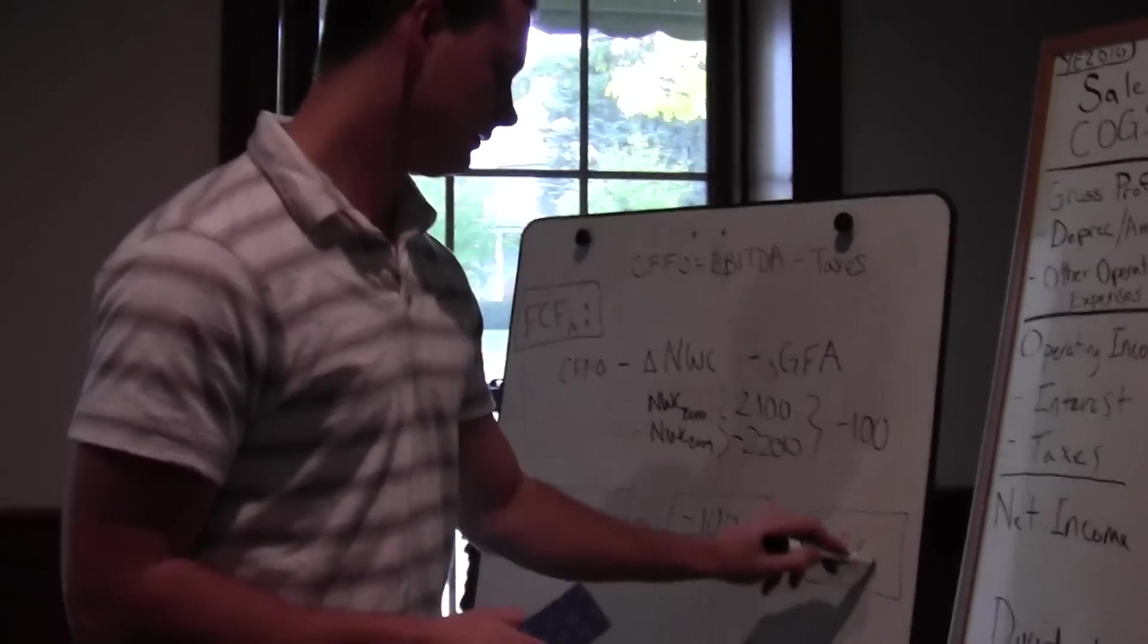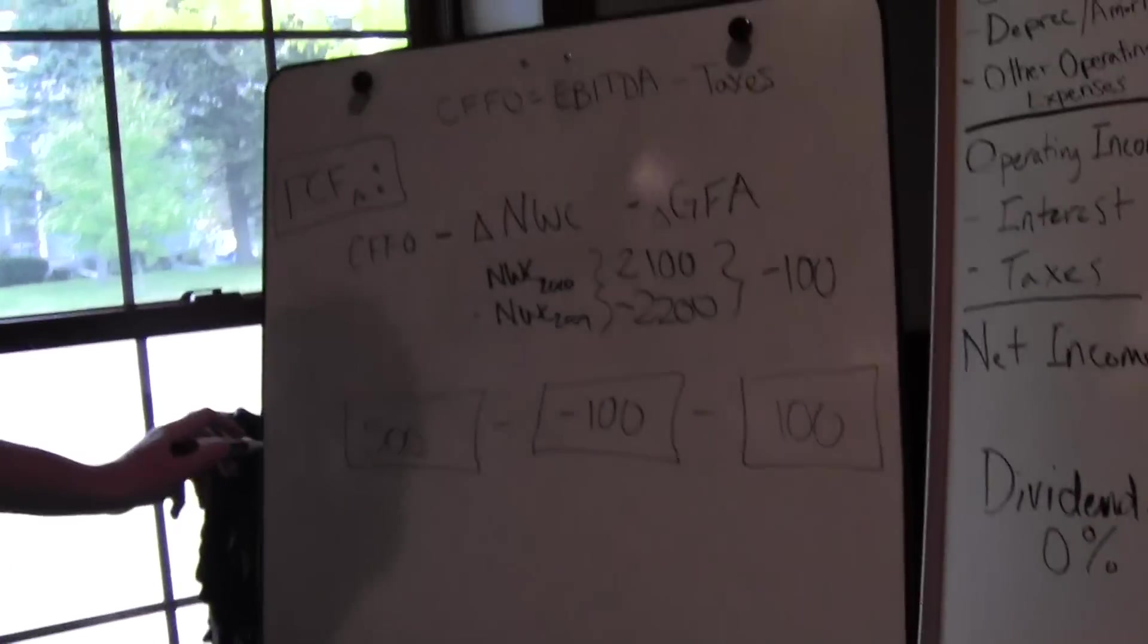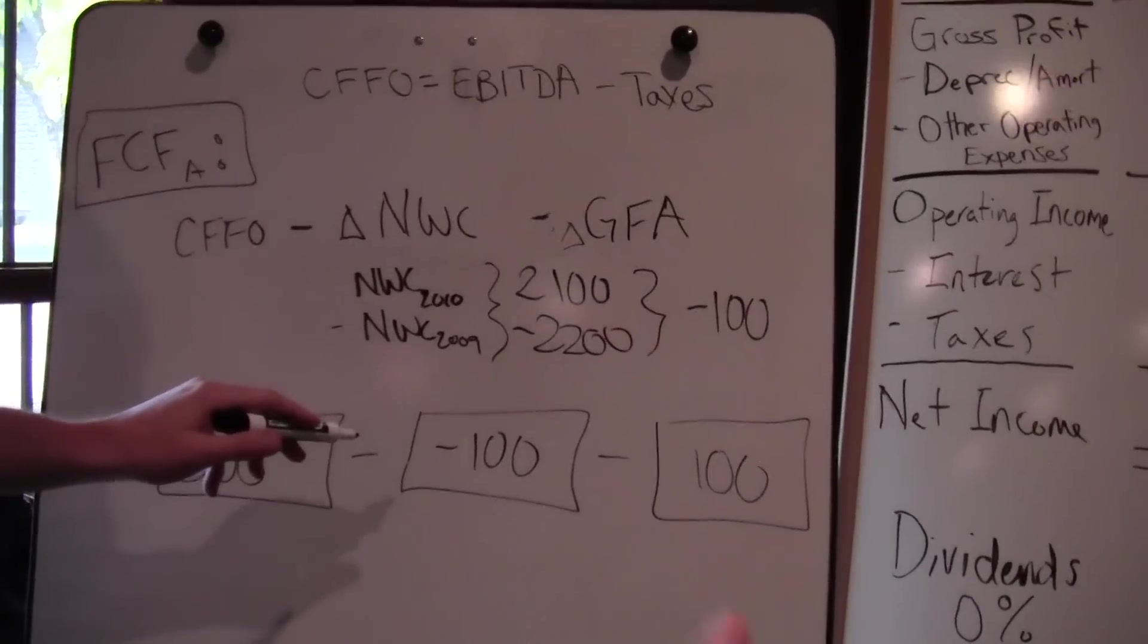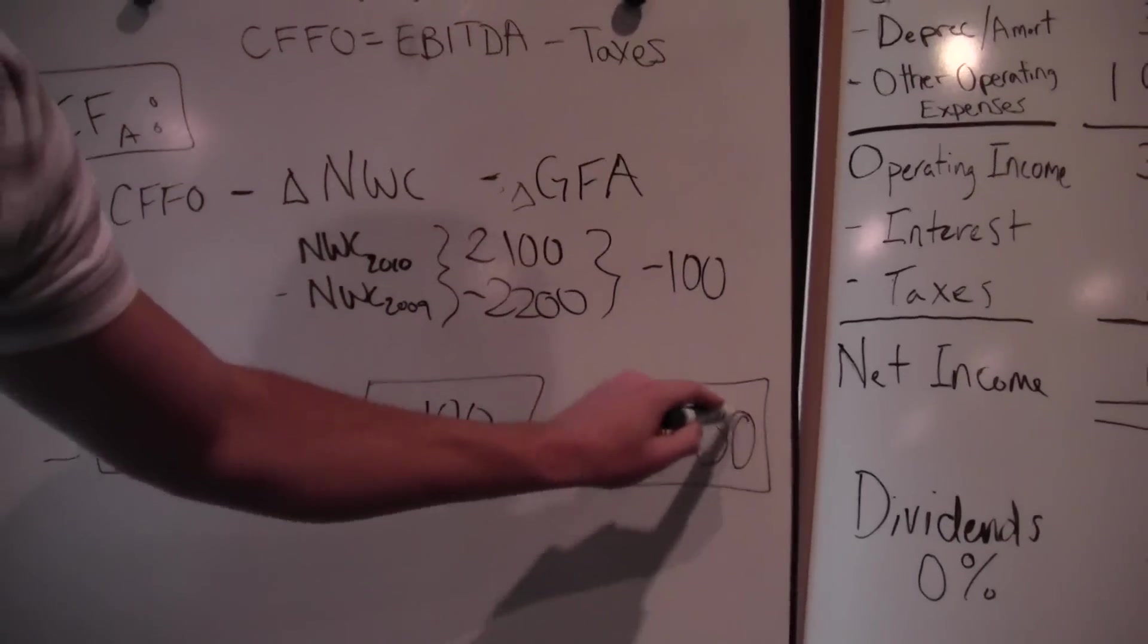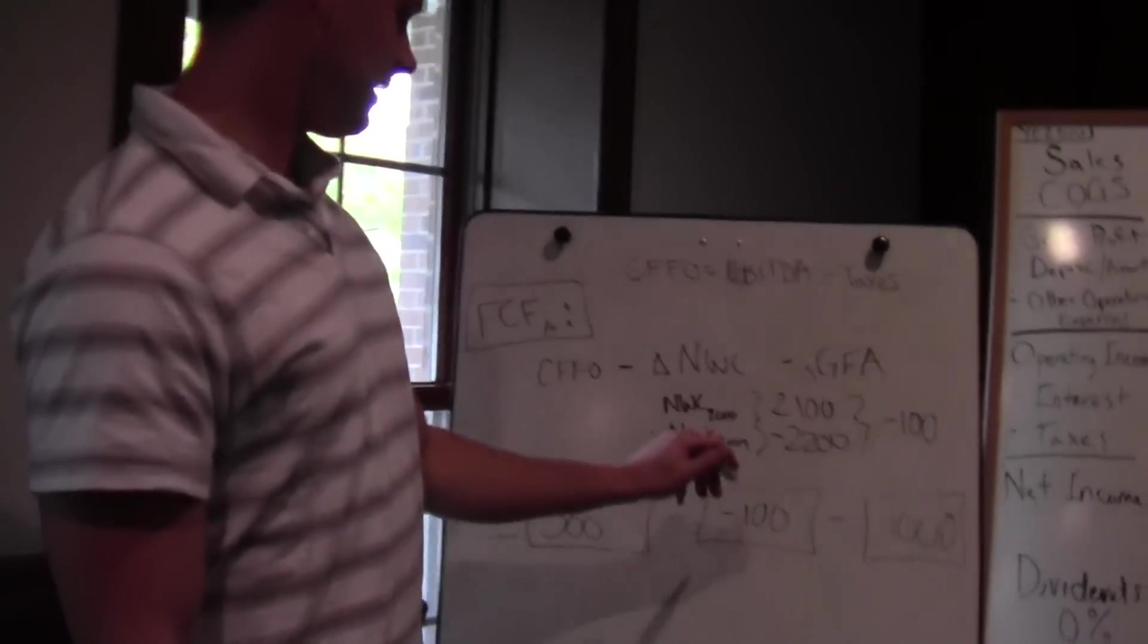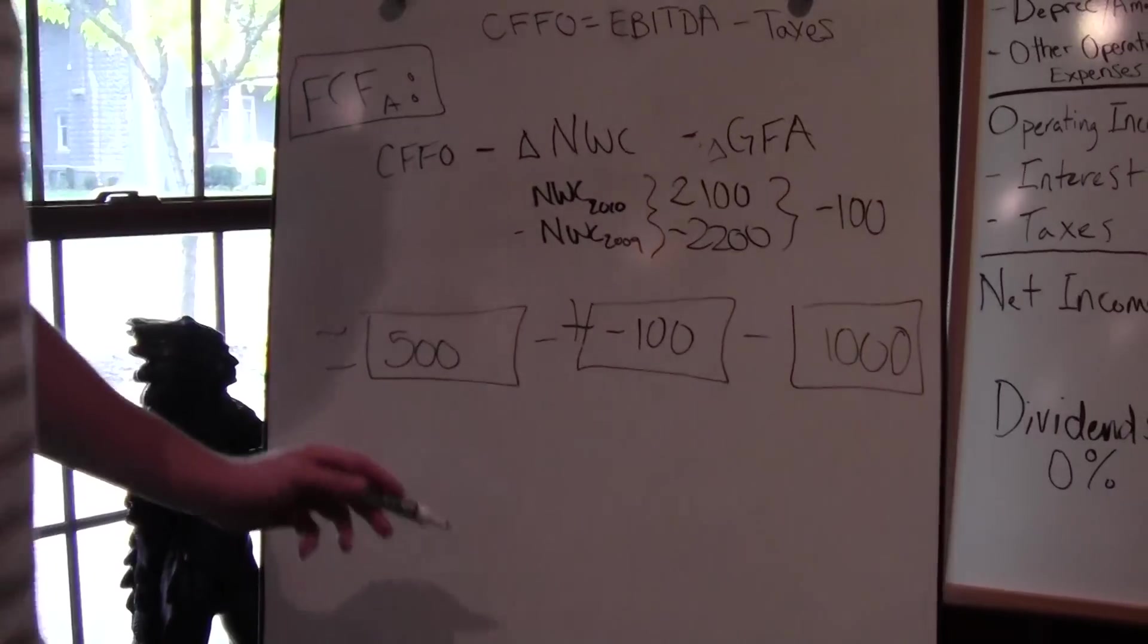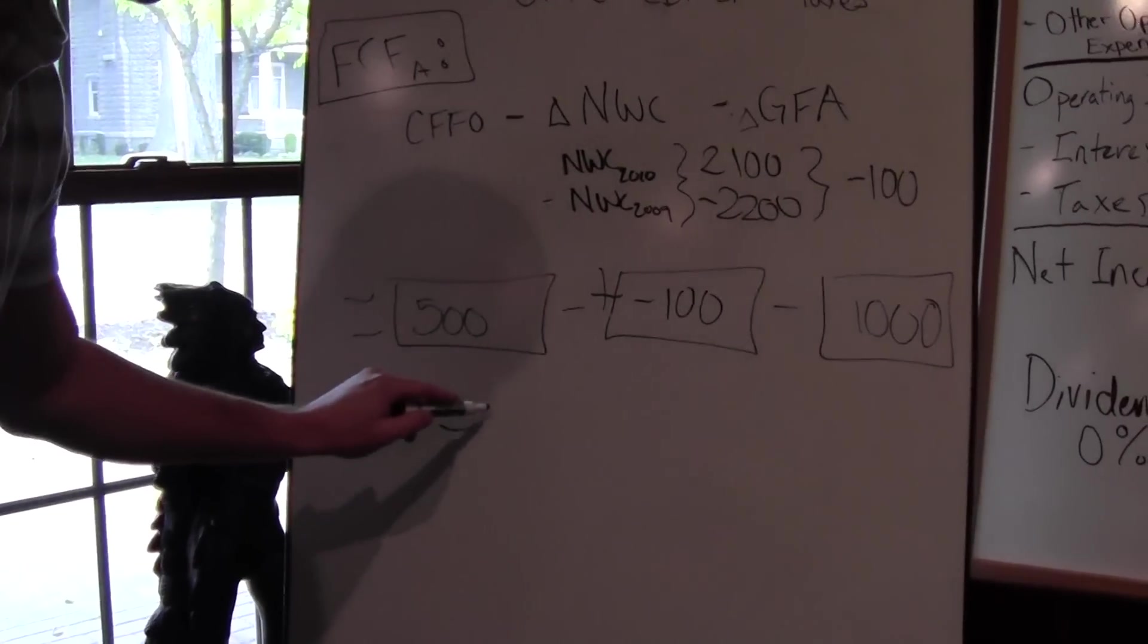So we minus $1,000. If you want to bring this down to our formula, we can say $500... extra zero. Oh, thank you. Lori's always checking my math. So we have $500 minus that minus $100, so that's going to be a plus. That's $600 minus $1,000 equals negative $400.